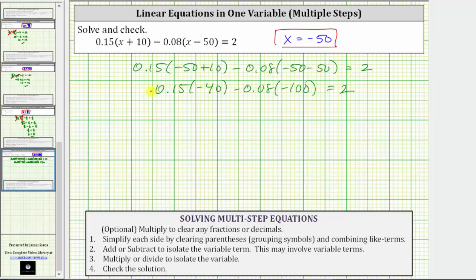And now multiplying on the left, 0.15 times negative 40 is negative 6. We have negative 6 minus 0.08 times negative 100 is negative 8. Subtracting negative 8 is equivalent to adding positive 8. The left side is equivalent to negative 6 plus 8. And negative 6 plus 8 does equal 2. 2 equals 2 is true. Verifying the solution is correct.